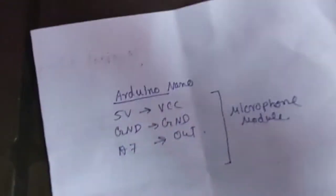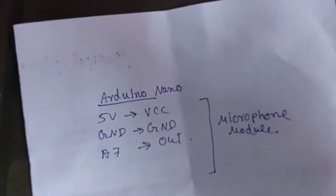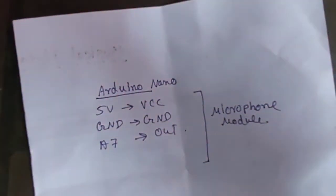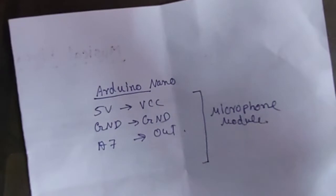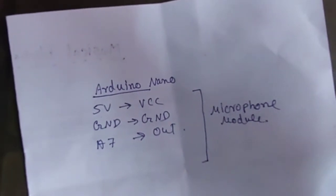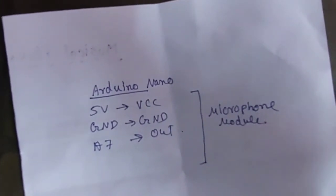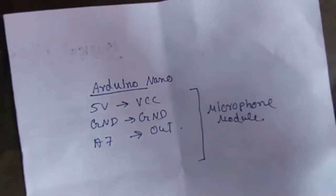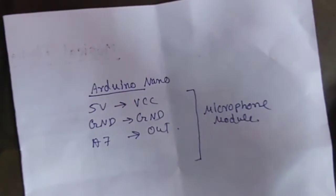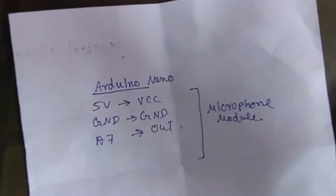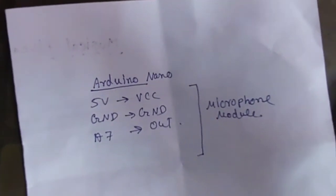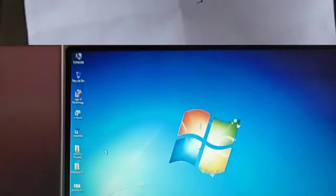On the other hand, you have to connect the microphone module with Arduino Nano. 5V of Arduino will be connected with VCC, ground will be connected with ground of the microphone module, and A7 will be connected with the OUT of the microphone module.